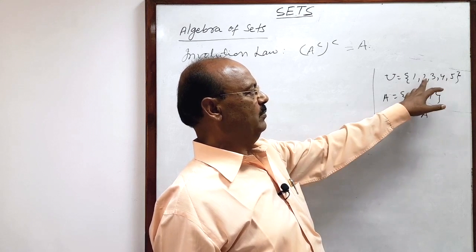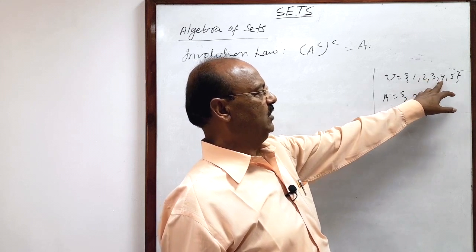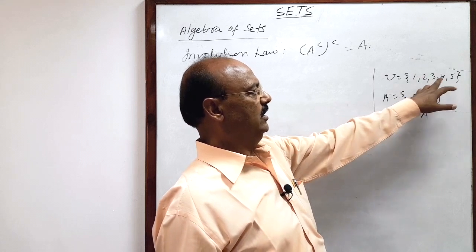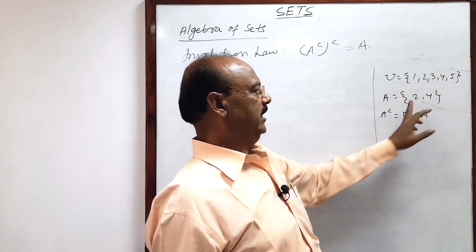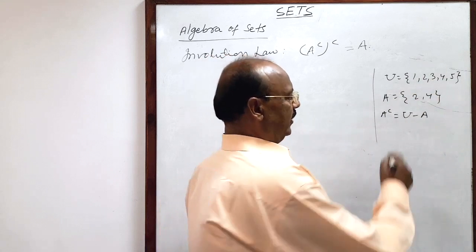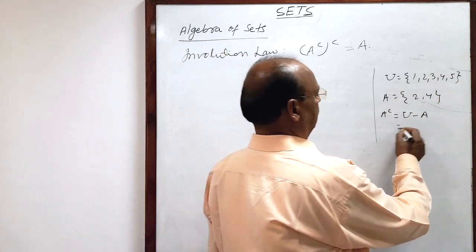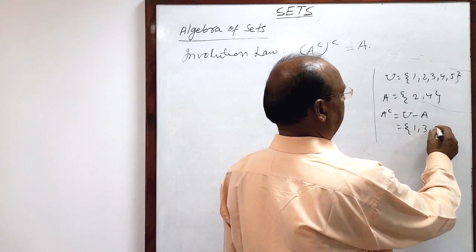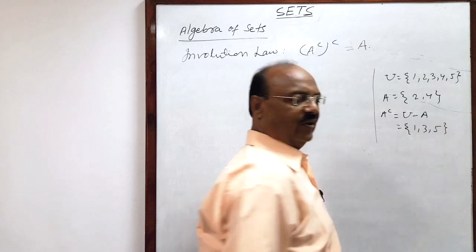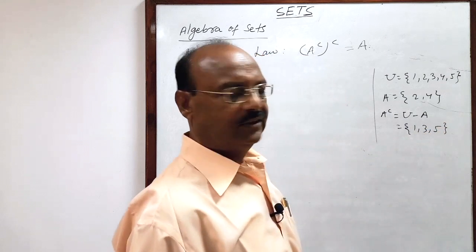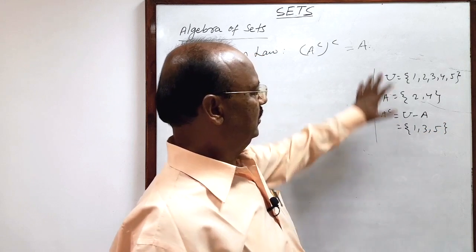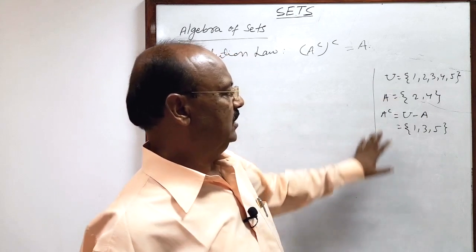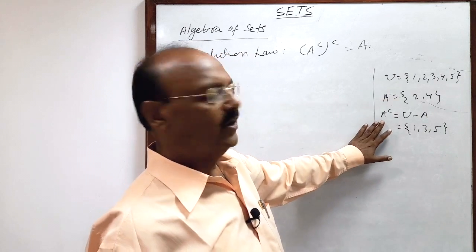So if 2 and 4 are omitted from the universal set, we get {1, 3, 5} — that will be A complement. In this way we can understand what A complement is.